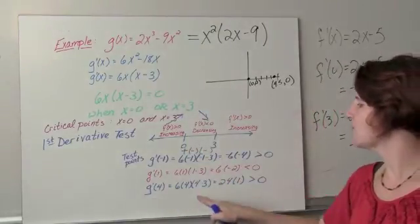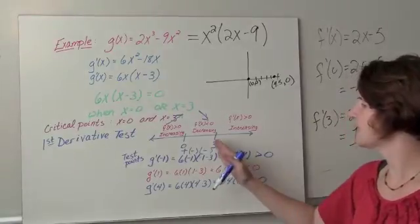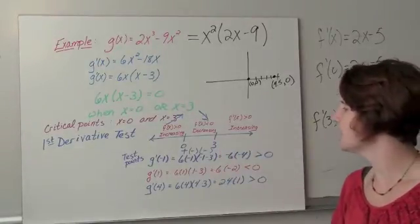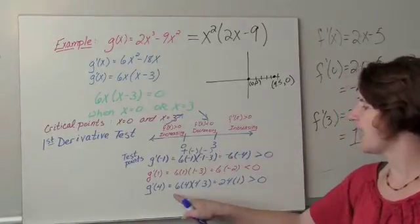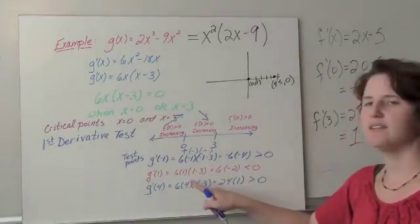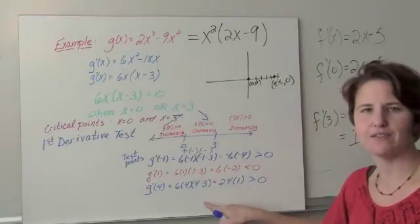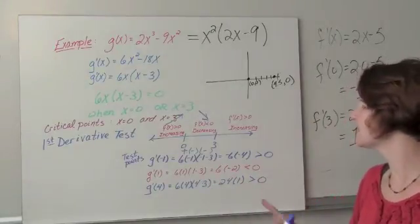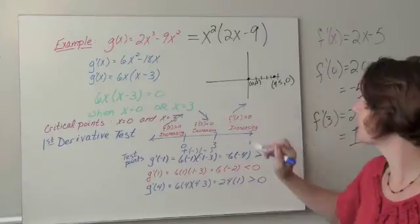And then in the last one, pick a number that's to the right of 3. And I plugged in 4. I have 6 times 4 times (4 minus 3). Positive, positive, positive factor. The product is positive. So we're increasing.